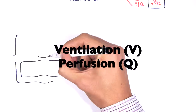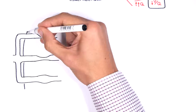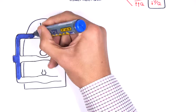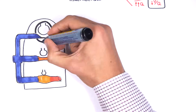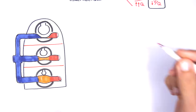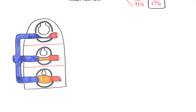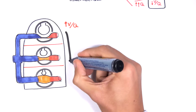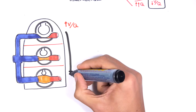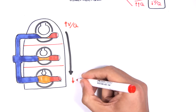A simple concept to understand is that the lung is divided into three zones. The so-called ventilation-perfusion ratio is higher at the apex of the lung on the top. Towards the base of the lung, the ventilation-perfusion ratio is decreased.